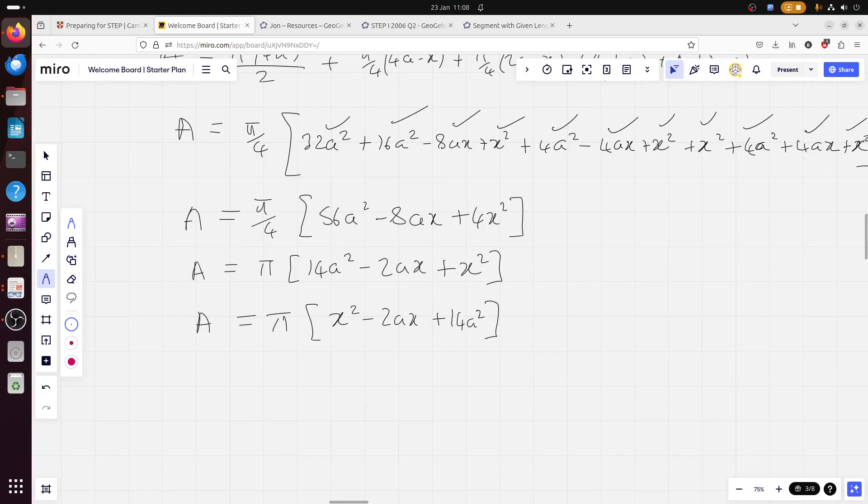I'll just write it down the other way around, just to remind us. And I've always said this to students. We use letters at the start of the alphabet for constants, and we use letters at the end of the alphabet for variables. There's a good reason for that. It's so we don't muddle them up. OK, let's complete the square. x minus a squared minus a squared plus 14a squared. So, that's obviously A equals pi times x minus a squared plus 13a squared.